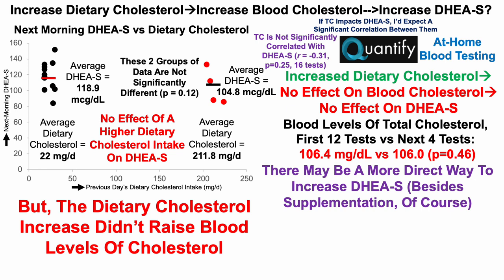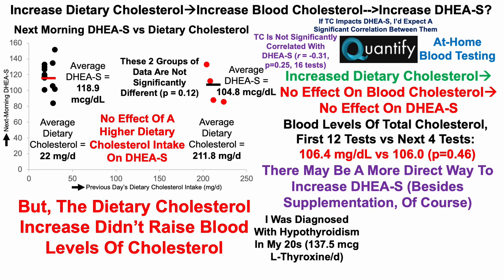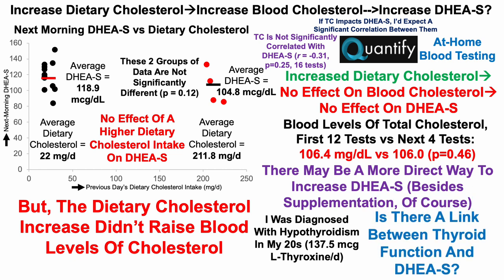There may be a more direct way to increase DHEA sulfate. Besides supplementation — I can already hear people saying just supplement and fix the problem — but that doesn't address why my DHEA sulfate is low, and it doesn't get at the root cause. I want to improve the root cause rather than put a Band-Aid on the problem. I was diagnosed with hypothyroidism in my 20s, and since then I've been taking levothyroxine, also known as T4. My current dose is 137.5 micrograms per day. So is there a link between thyroid function and DHEA sulfate?